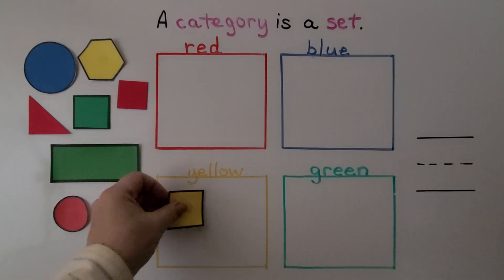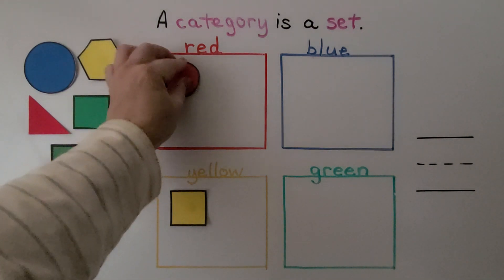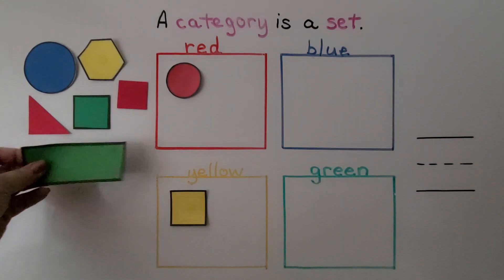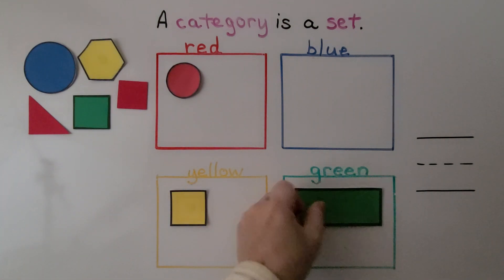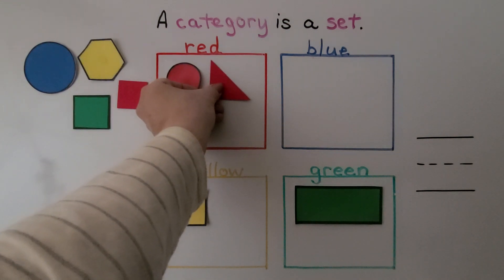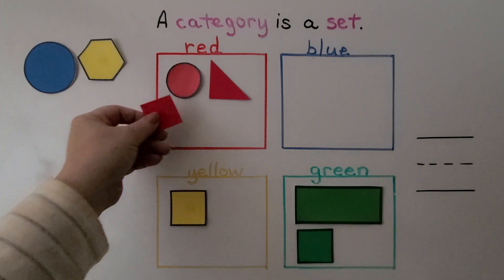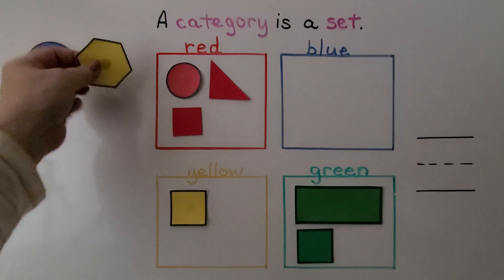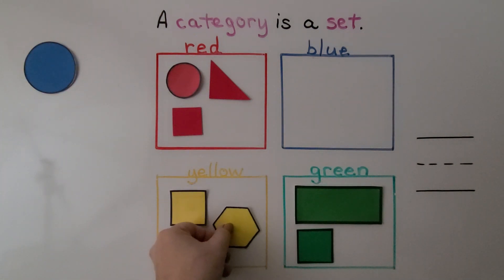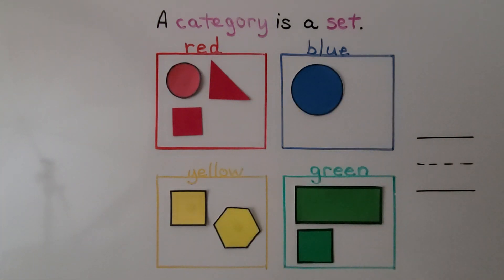Here we have a yellow shape — we can put that in the yellow category. Here we have a red one — we can put it into the red category, the red set. Here we have a green shape — we can put that into the green set. Here we have another red — that can go into the red set. Here we have another green — that goes into the green set. Here we have another red — we can put that in the red set. Here we have a yellow that can go in the yellow set. And here we have a blue that can go into the blue set. Their shape doesn't matter — only the color is important.